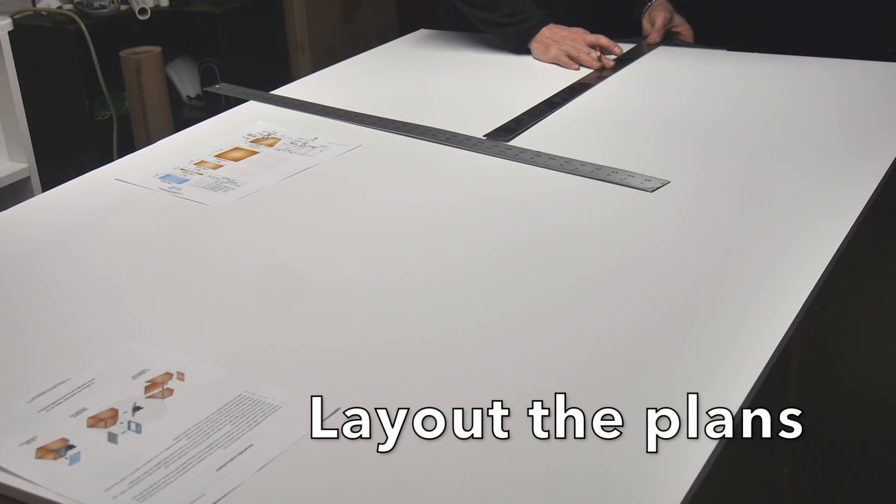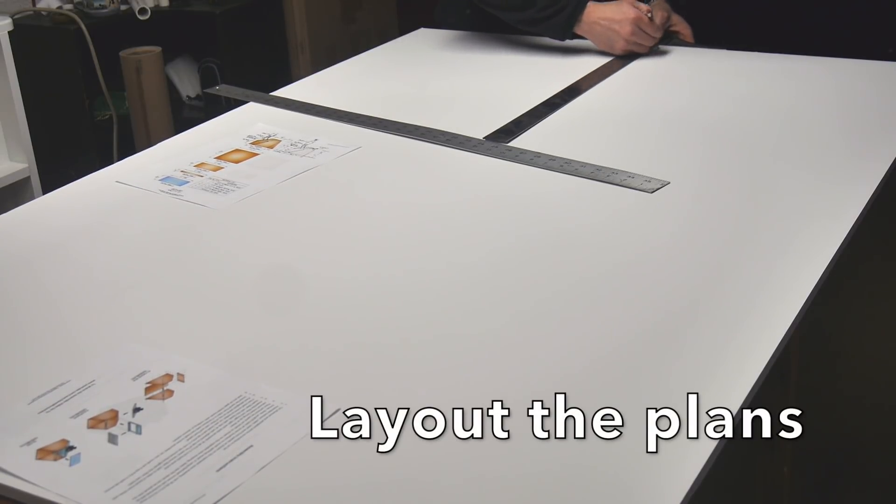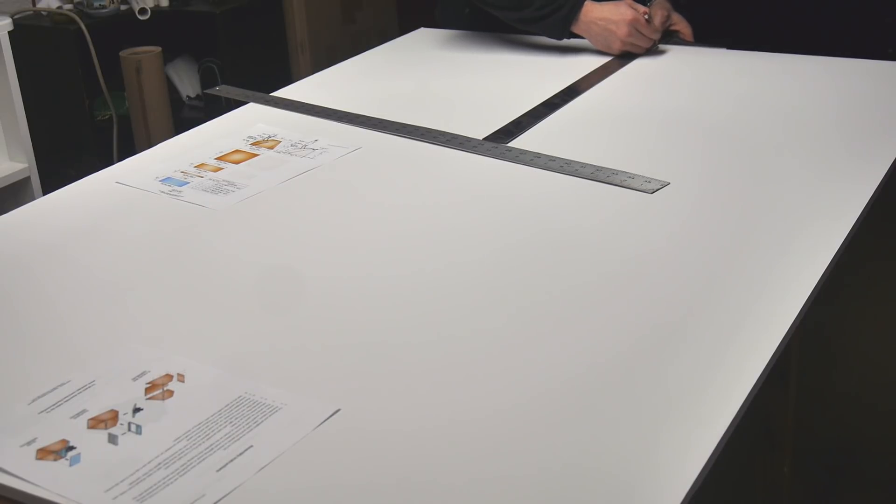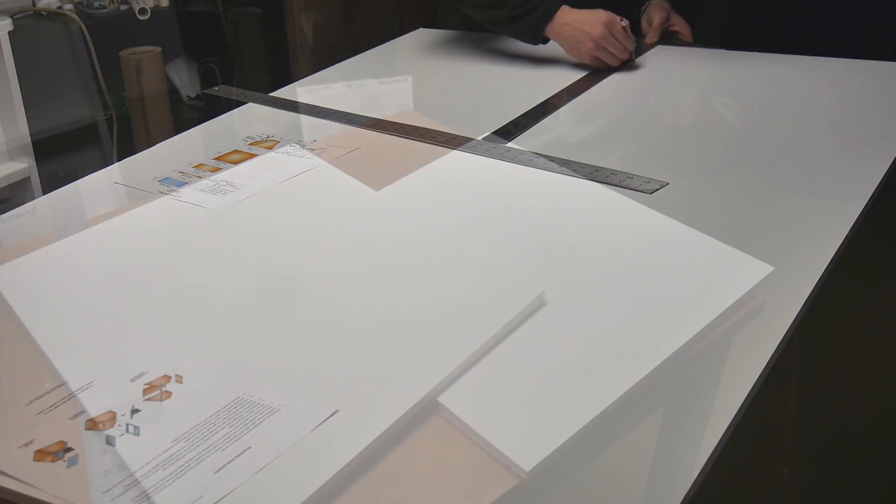So the first thing that I'm going to do is I'm going to lay out my plans. I'm going to draw them directly onto the foam core, and then I'm going to cut them out.